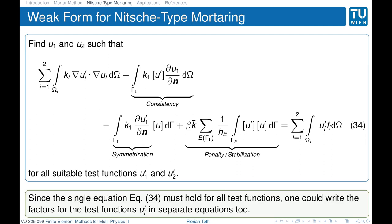The different terms are: the consistency term, which arises from adding the equations; the symmetrization term, which is zero because the jump in u must be zero; and the penalty term, which enforces the unknown to be equal on either side of the interface. Since the equation must hold for all test functions, we could also write it as two separate equations as the factors of the test functions u-prime i.